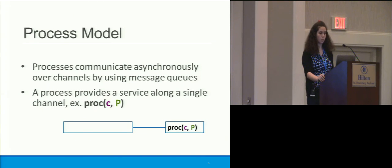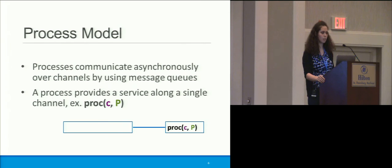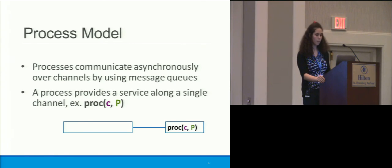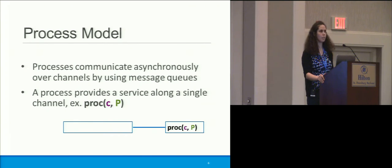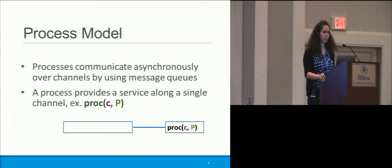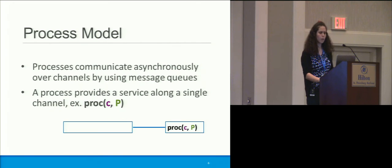In our process model, we have processes that talk to each other over channels, and there's a queue that sits in each channel acting as a message buffer — so communication is asynchronous. We say that our process provides a service along a single channel. Something like 'proxy P' means we have a process named P providing a service along channel C. We have the invariant that a process can be a client of many other processes but can only provide a service along one channel. Each channel connects exactly two processes — this is our linearity assumption.